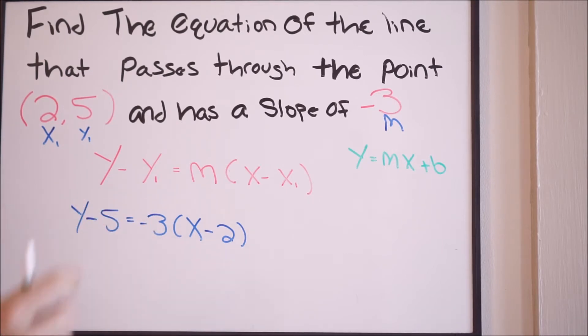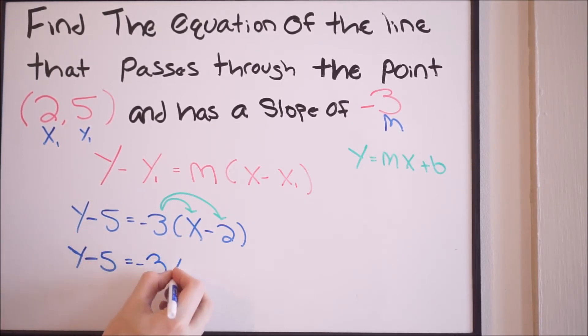First up, let's go ahead and distribute this negative 3 inside the parentheses to both of our terms. So let's rewrite this. We're going to have y minus 5 equal to negative 3x, and then a negative 3 times a negative 2 will give us positive 6.